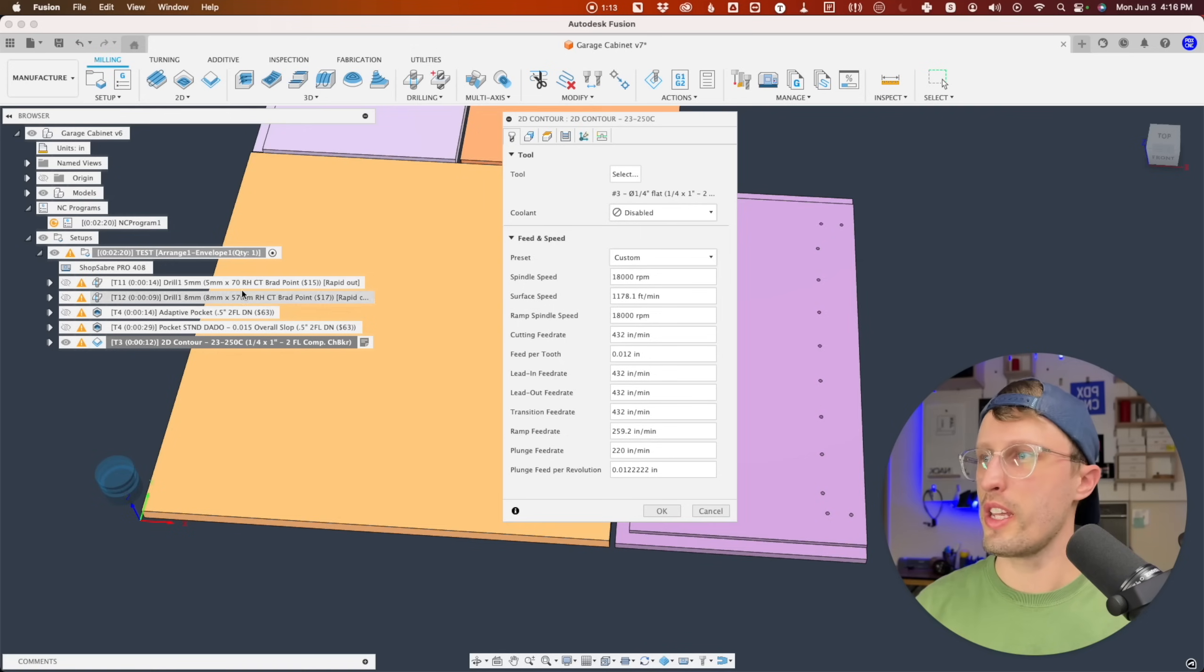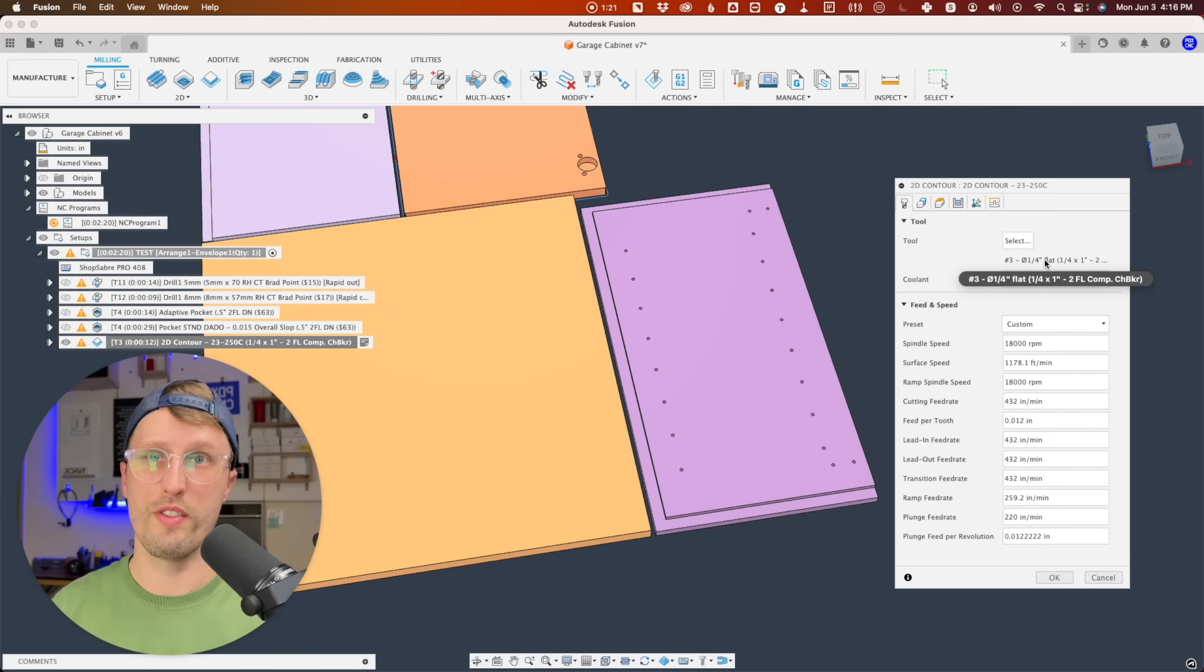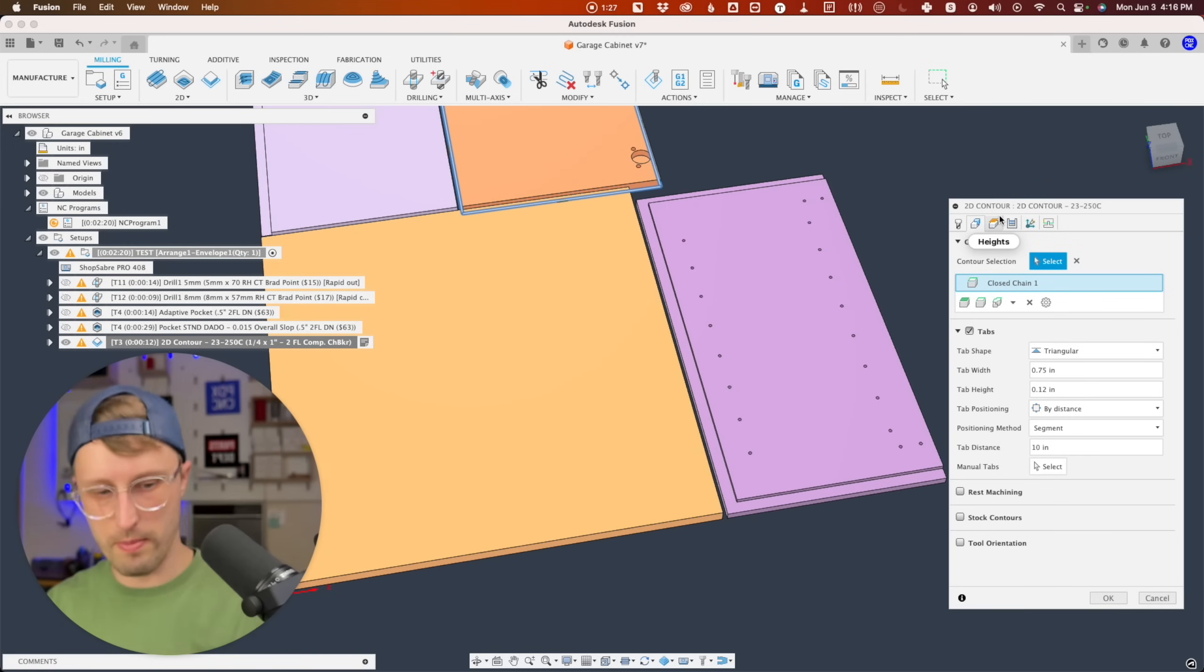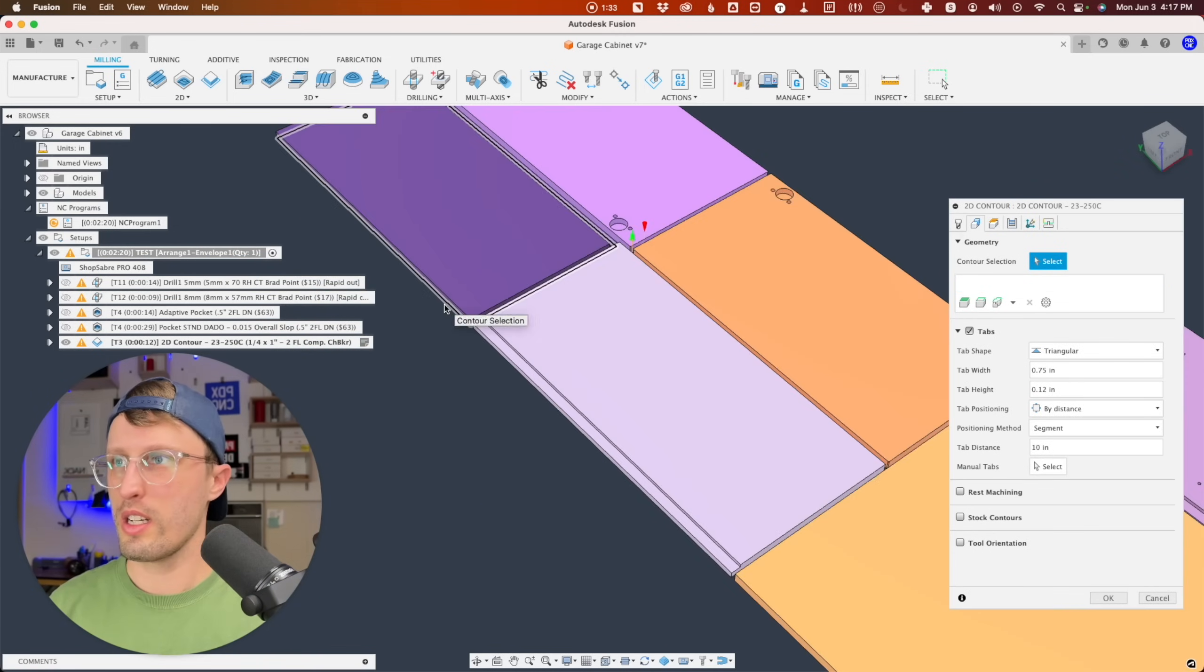So if I edit this 2D contour, this is our 23250C, which is a quarter inch compression cutter with chip breaker, this little guy. We would want to select all of our parts that we're going to cut here.